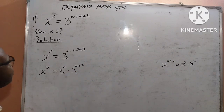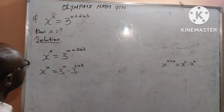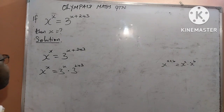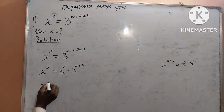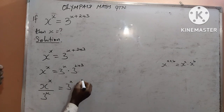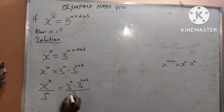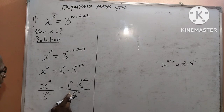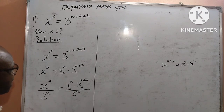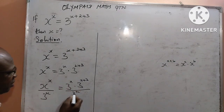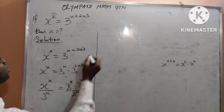The next step is to divide both sides by 3 to the power x. The reason for that is so that we can get rid of the 3^x on the right hand side and move x to the left hand side in order to find the value of x. That means I shall now have x to power x divided by 3 to power x, equal to 3 to power x multiplied by 3 to power 243, divided by 3 to power x. On the right hand side, 3^x at the numerator and 3^x at the denominator cancel, leaving us with 3^243.